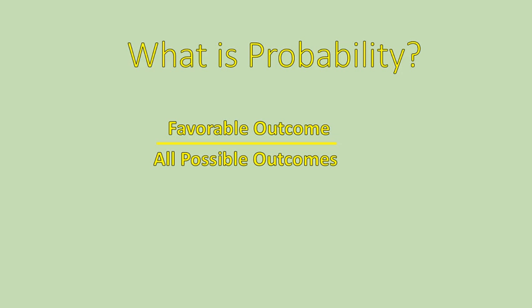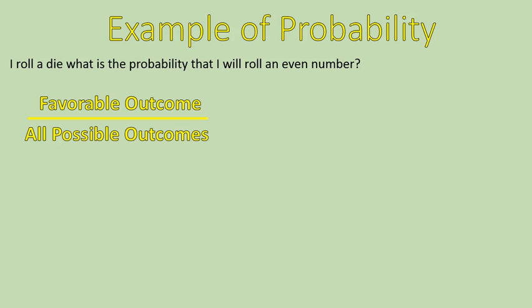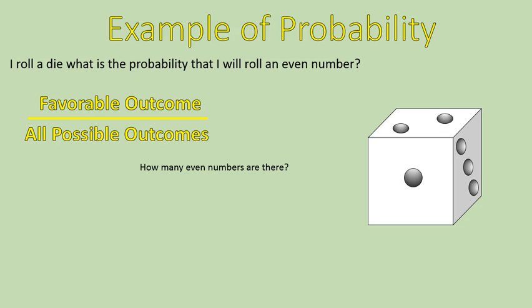Here's an example to illustrate how that works. If I roll a die, what is the probability that I will roll an even number? We are going to look at the favorable outcomes — the things that we're looking for — over all the total possibilities. First question: how many even numbers are there? On a die, you've got a cube with six sides. The even numbers are two, four, and six, so there are three even numbers on a die.